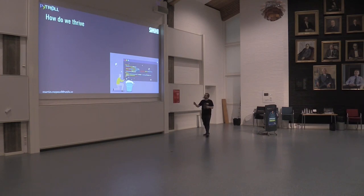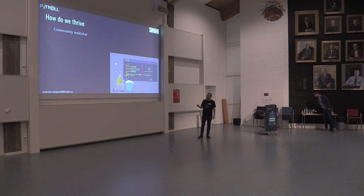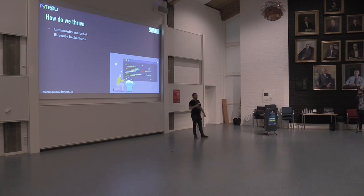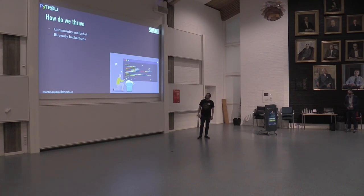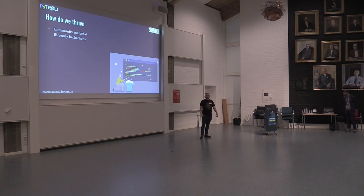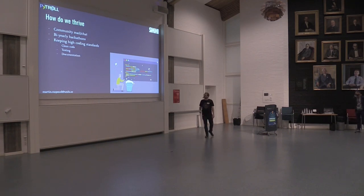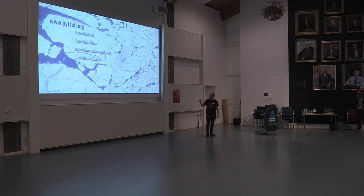That's my last slide — how we thrive. We have a community chat and community mailing list that are quite active — people ask a lot of questions, we try to answer as much as we can, and people answer each other, which is really great. We have bi-yearly hackathons — once a year we all meet for a week, decide on the priorities we're going to work on, and then we just hack together. The other time of the year we have it remotely, because some people cannot afford to travel to the venue — so it's also good to democratize it. And we're trying to keep high coding standards, using clean code as much as we can, with a lot of testing and documentation.